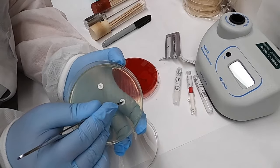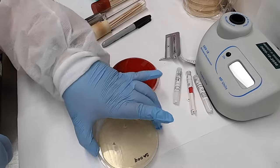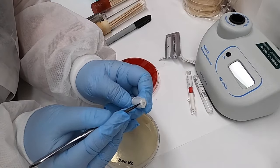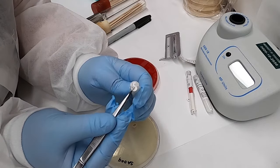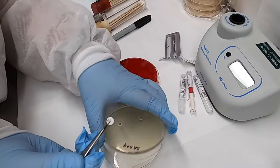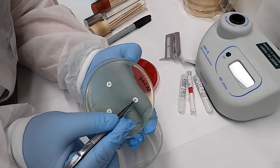So depending on how many disks are being placed on the plate, you may need to be aware of their relative placement to each other. You want to ensure that the inhibitory zones don't overlap, making measurement difficult or impossible.